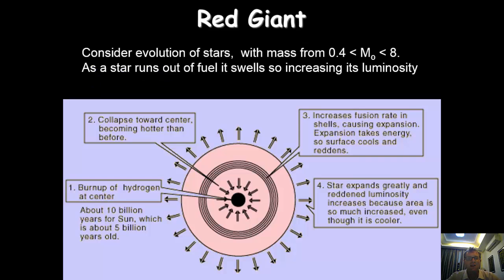Now for stars which are a bit bigger, with masses from 0.4 to about eight times that of our Sun, as the star runs out, it swells, also increasing its luminosity, becoming what's known as a red giant.